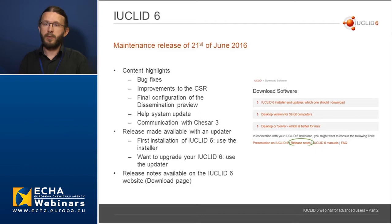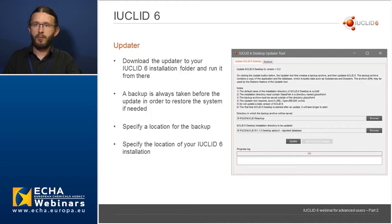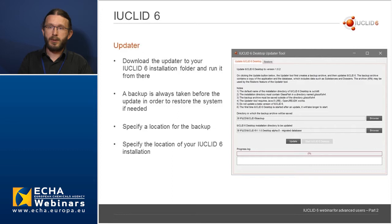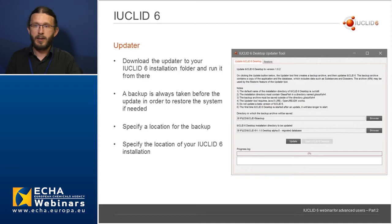For each maintenance or service release we plan, we will always publish release notes available on the download page on the IUCLID 6 website, so that you can have an overview of the changes, fixes and improvements included in the release. The updater is a new tool that has been made available — you need to download it from the IUCLID website and then save it in your IUCLID 6 installation folder in order to run it from there.